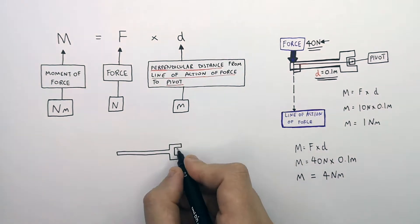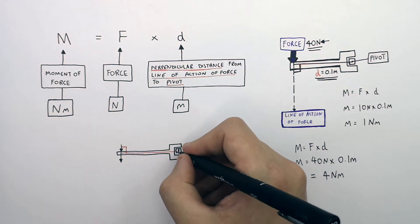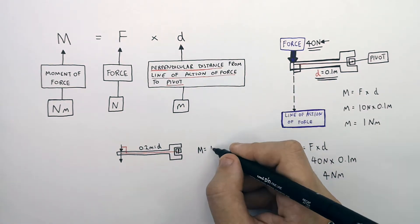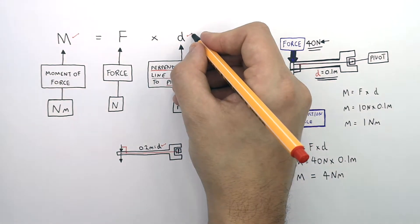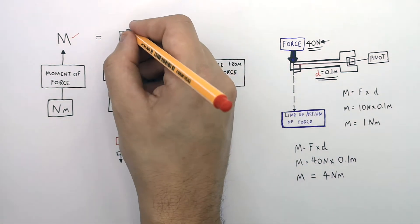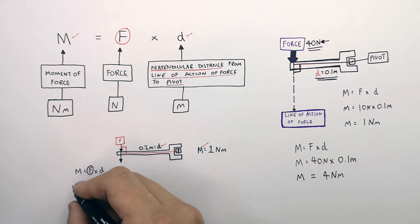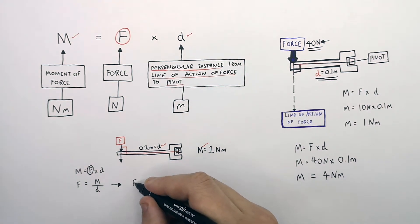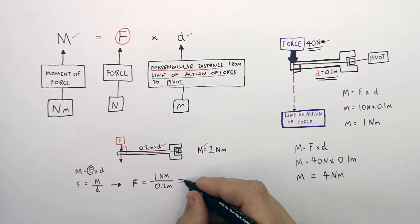Now with a spanner and a bolt where the perpendicular distance from the line of action of the force to the pivot is 0.2 meters, and the moment in an anti-clockwise direction is 1 Newton meter, we have M and D, so we can calculate F. Recall M equals F times D; rearranging gives F equals M divided by D. So F equals 1 Newton meter divided by 0.2 meters, giving a force of 5 Newtons.